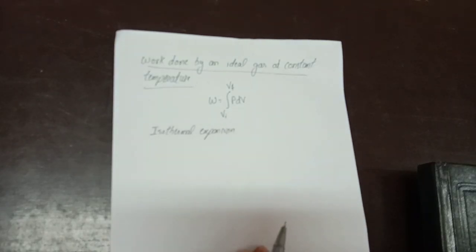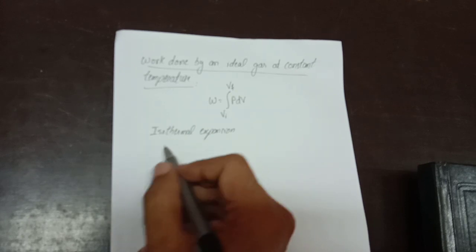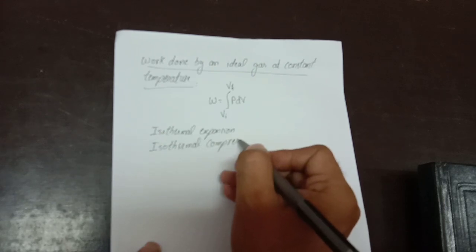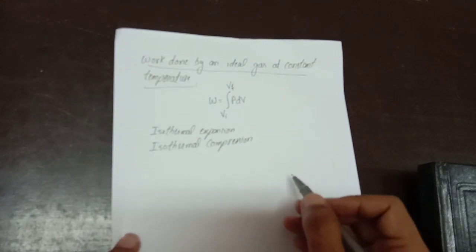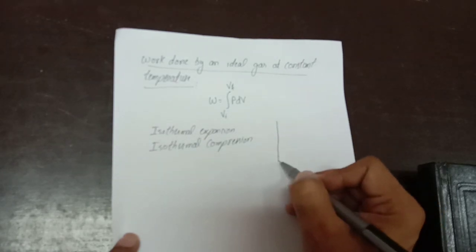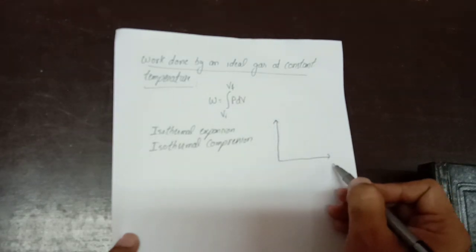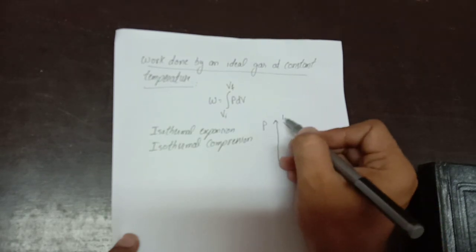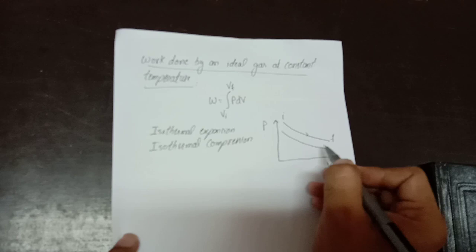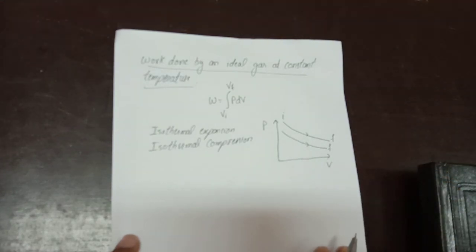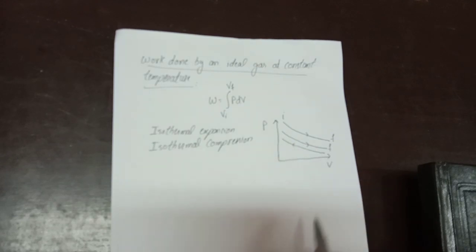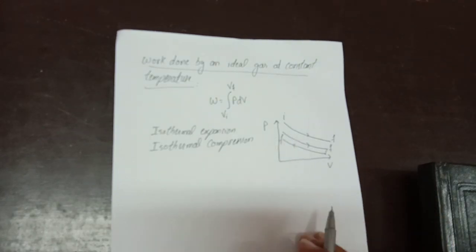When volume is increasing it is isothermal expansion; when volume is decreasing it is isothermal compression. Using a PV diagram with volume on the X-axis and pressure on the Y-axis, if volume increases from initial to final state at constant temperature it is isothermal expansion; if volume decreases it is isothermal compression.